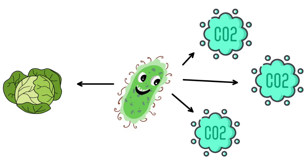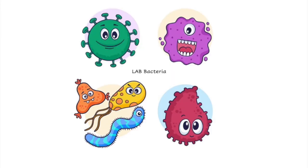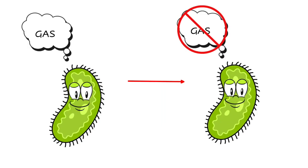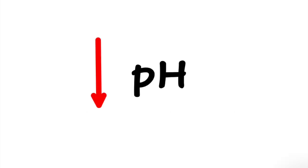Lactic acid bacteria such as Leuconostoc mesenteroides starts fermenting the sugars to produce lactic acid and carbon dioxide. These types of bacteria are heterofermentive, or gas-forming. The carbon dioxide builds up and creates an anaerobic environment which promotes the growth of other LAB bacteria. After about a week, the homofermentive LAB — the non-gas formers — such as Lactobacillus plantarum, Lactobacillus brevis, and Pediococcus cerevisiae succeed the heterofermentive ones. These bacteria produce lactic and acetic acid, which lowers the pH of sauerkraut.